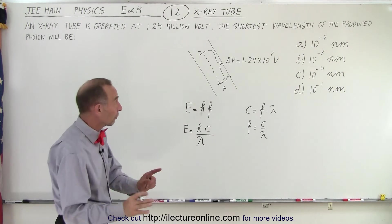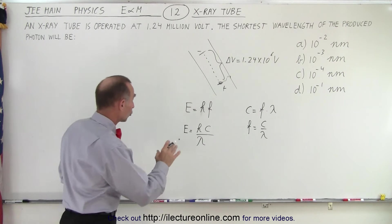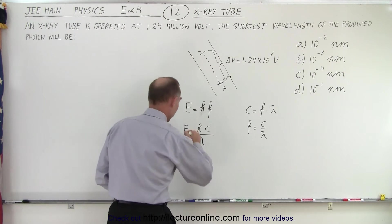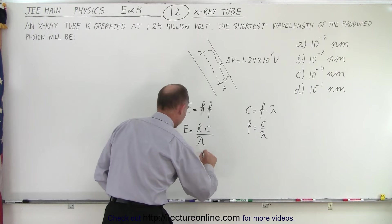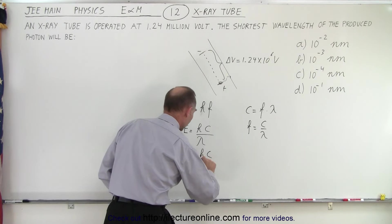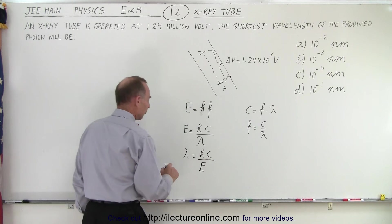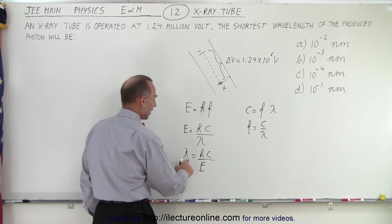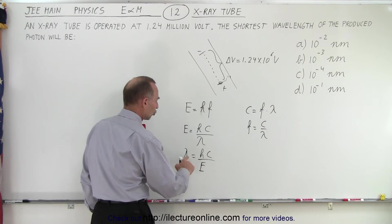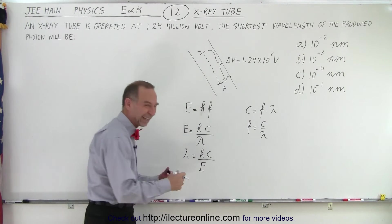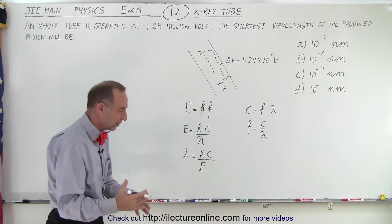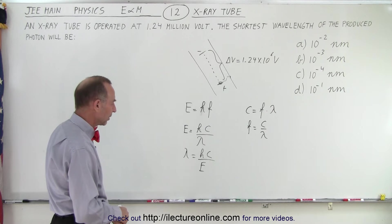Since we're looking for lambda, the shortest wavelength, we write lambda equals H times C over the energy. To have the shortest wavelength, we must have the largest energy. That's the concept and principle we're dealing with.